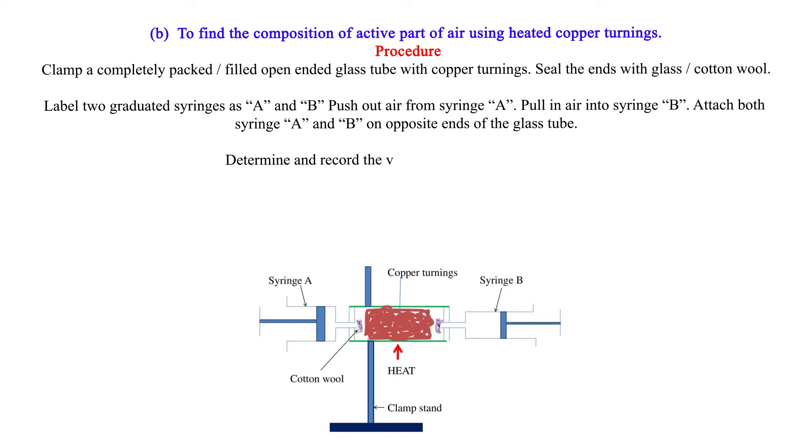Determine and record the volume of air in syringe B, V1. Heat the glass tube strongly for about 3 minutes. Push all the air slowly from syringe B to syringe A as heating continues.